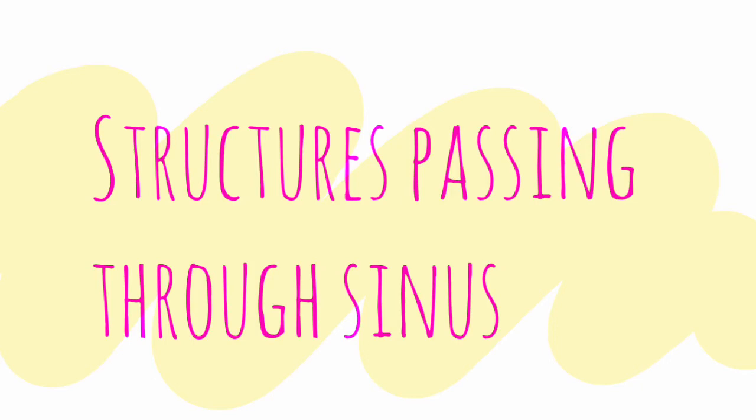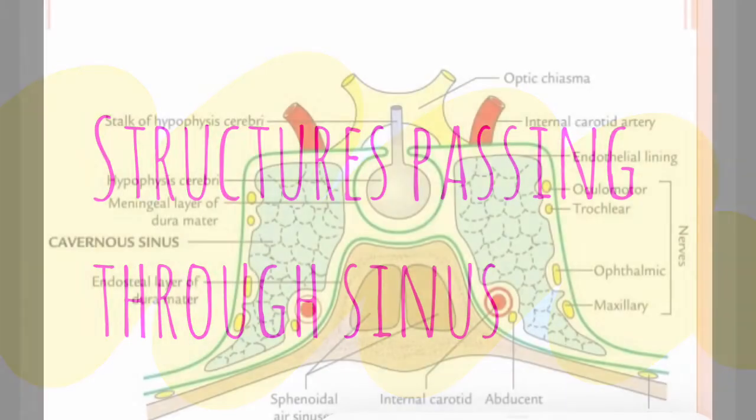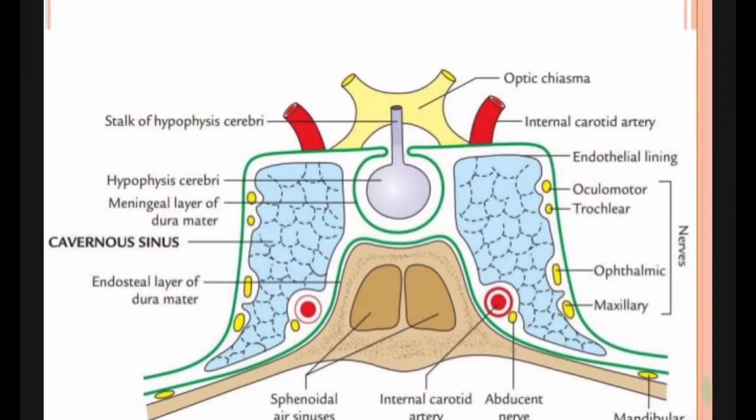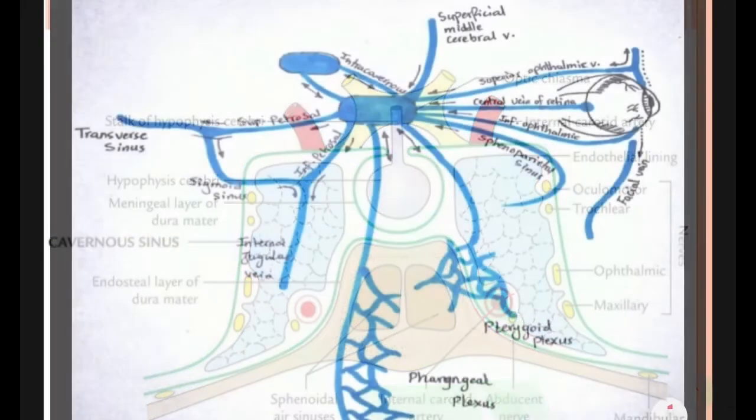The structures passing through the sinus are: number one, the internal carotid artery, and the abducent nerve.